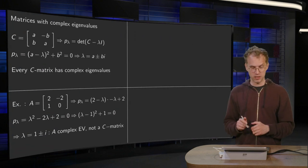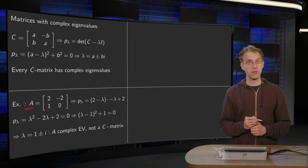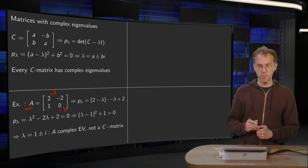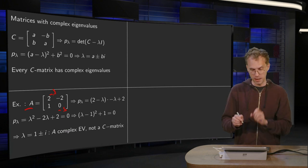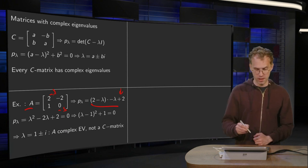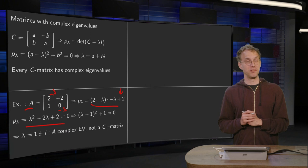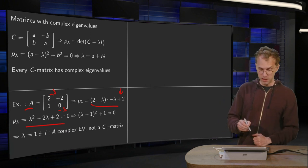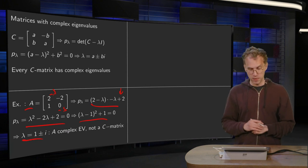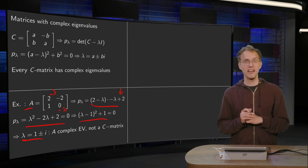Now we take another example, matrix A. Clearly it is not a scaling rotation matrix. We put minus lambda on the diagonal and compute p(λ), getting (2 − λ)(−λ) − (−2)(1), which gives p(λ) = λ² − 2λ + 2. Setting this to zero we find (λ − 1)² + 1 = 0, or lambda equals 1 plus or minus i. So matrix A has complex eigenvalues but it is not a scaling rotation matrix.